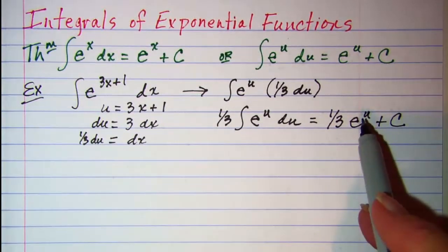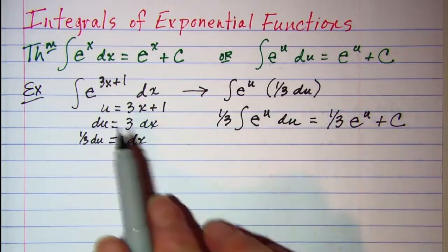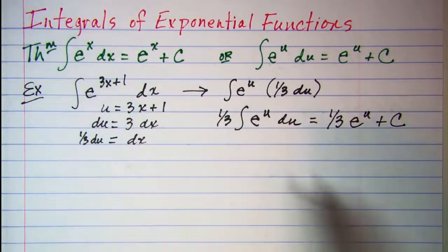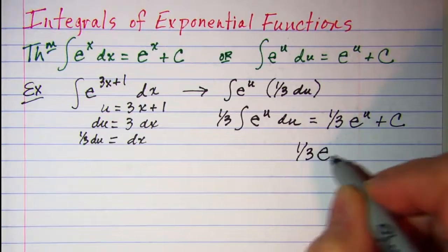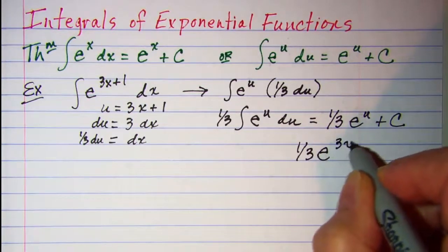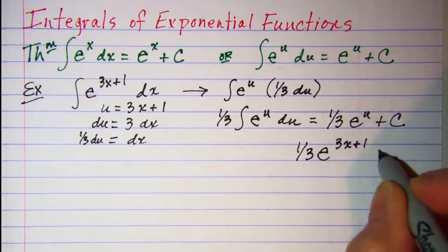Then we can put back the expression for u. My answer is 1 third e to the 3x plus 1 plus a constant.